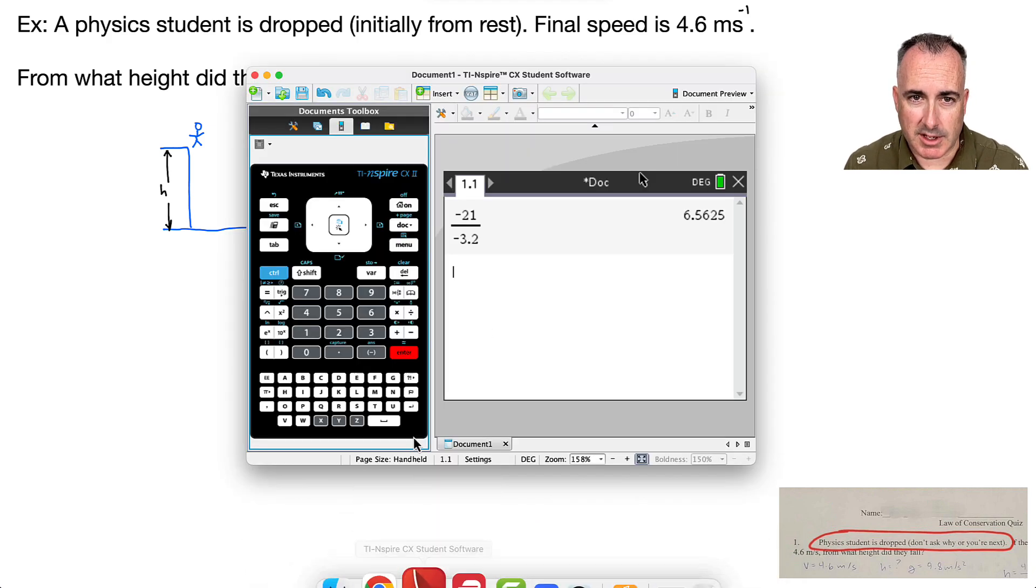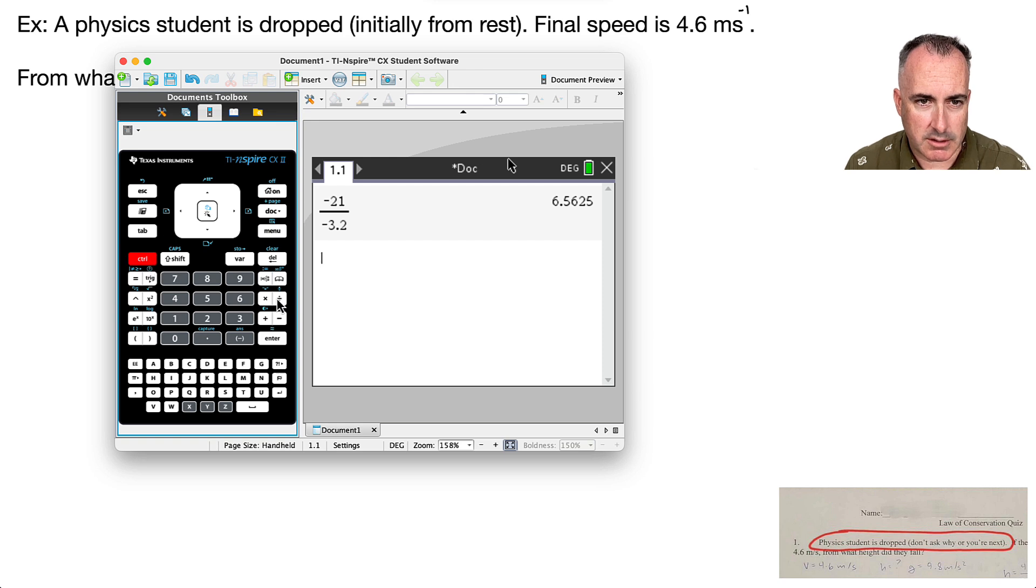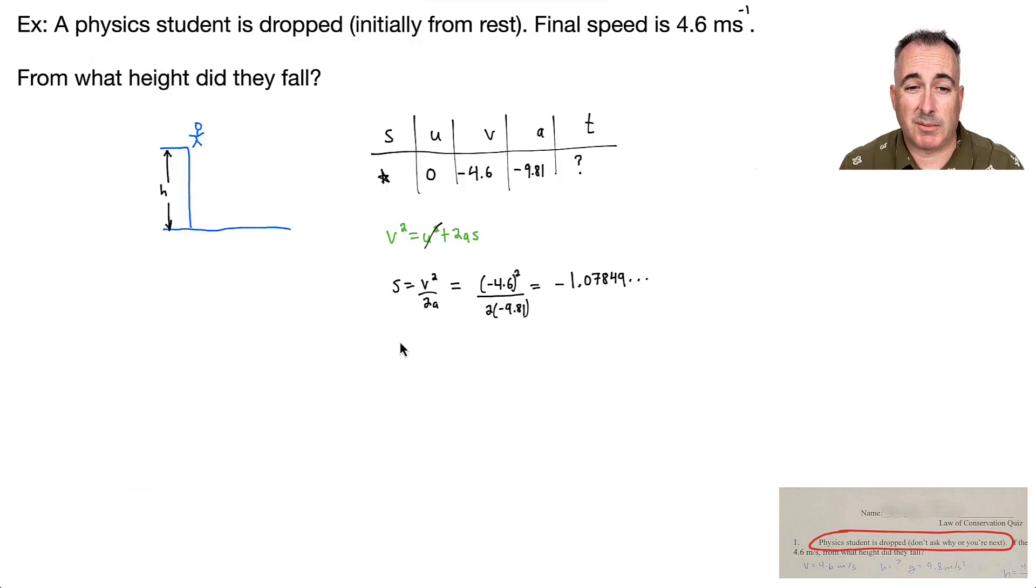So let's deal with this. I'll get out my trusty calculator again. I need a pretty fraction here. I'll put all this in brackets. Negative 4.6, all that squared, all that divided by 2 times negative 9.81. I end up with negative 1.07849.